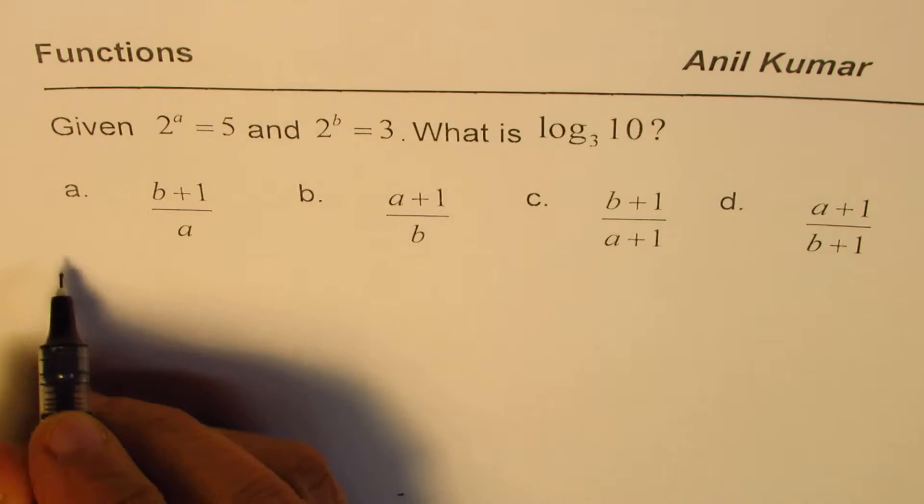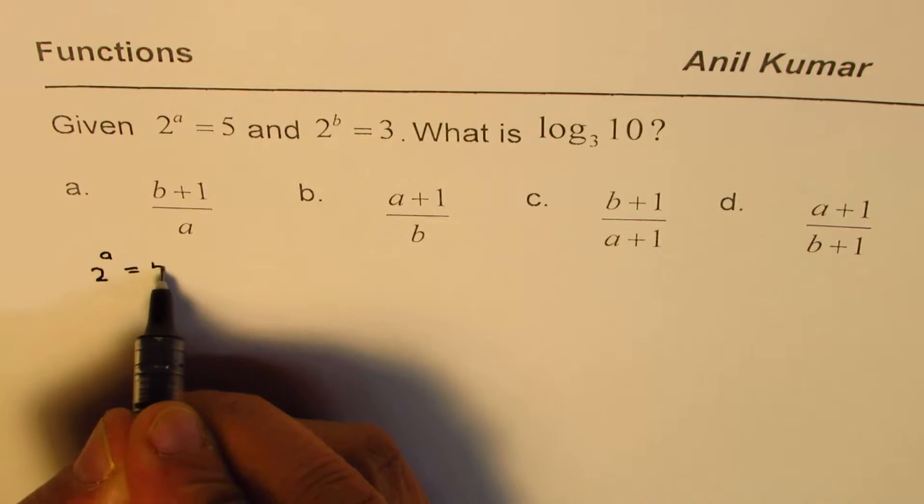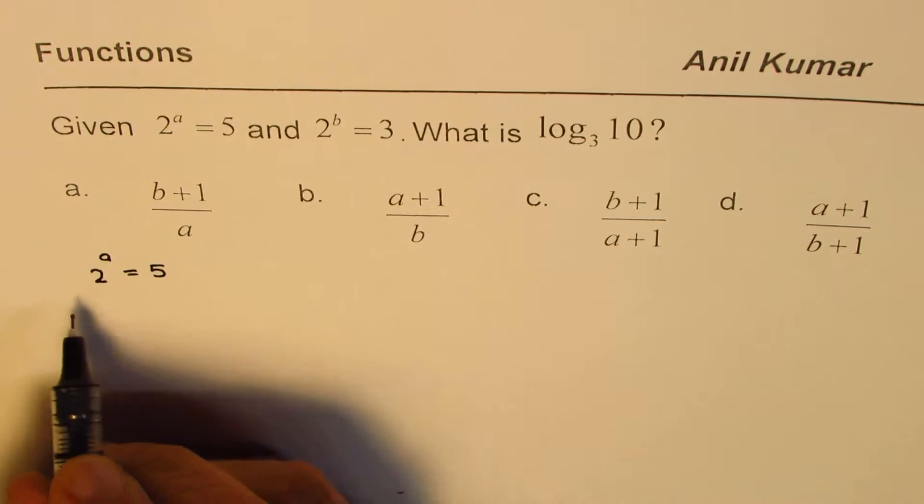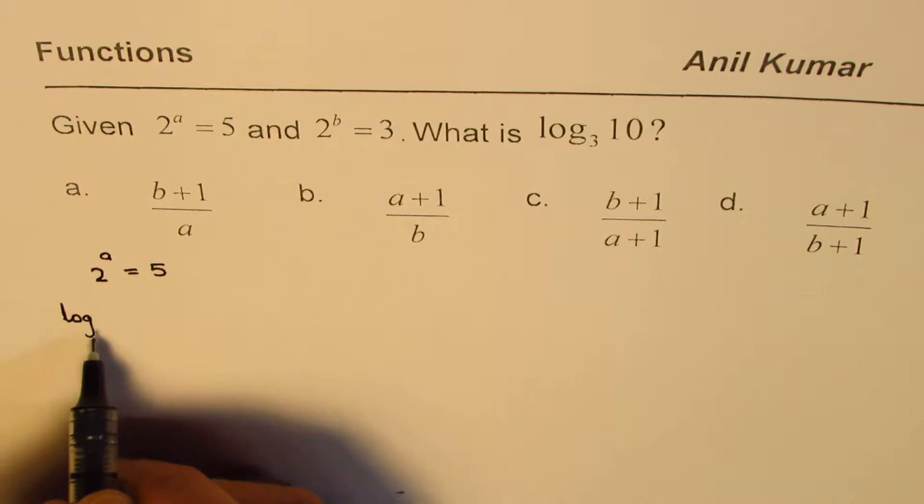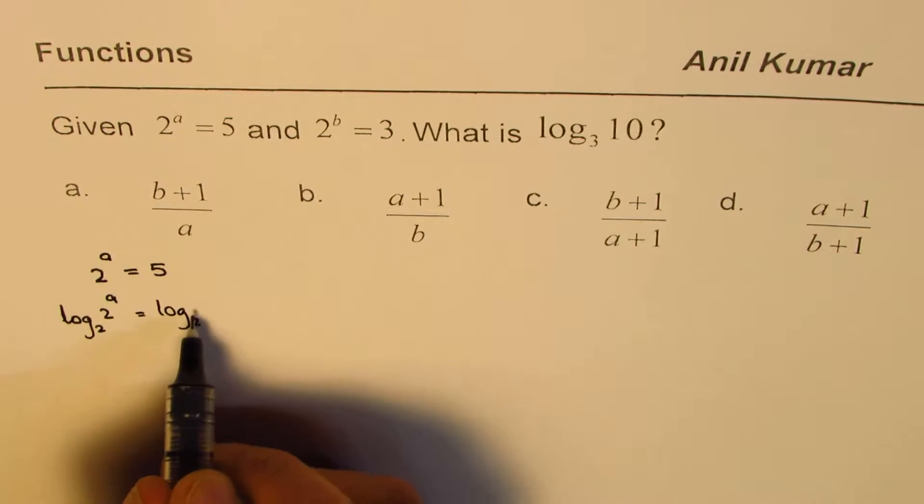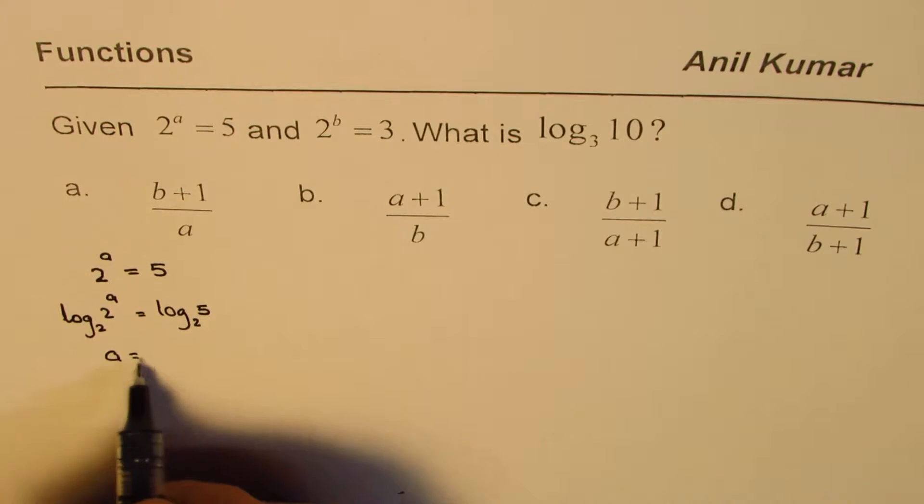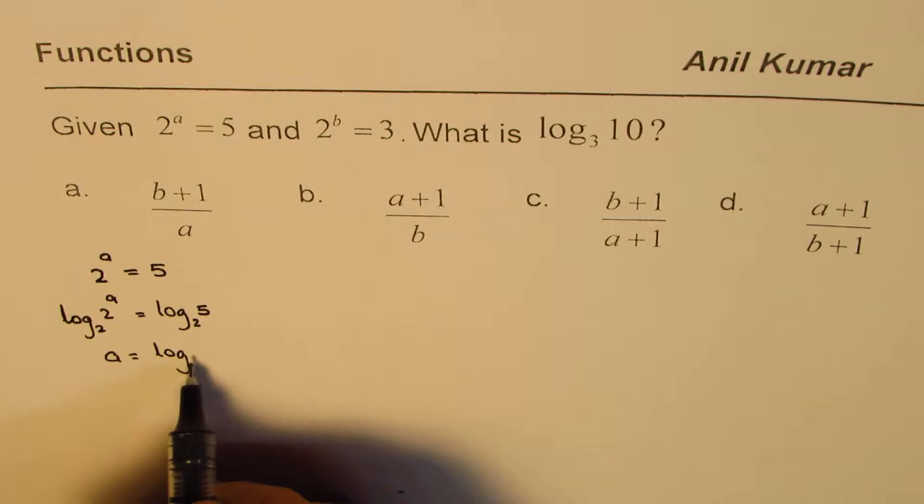Now let's rewrite what is given to us. We have 2 to the power of a equals to 5. So that really means that if I take log to the base 2 on both the sides, log base 2 of 2 to the power of a equals log base 2 of 5. So a equals log of 5 to the base 2.